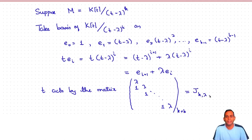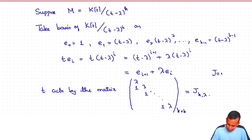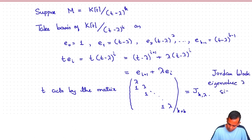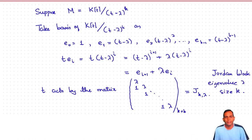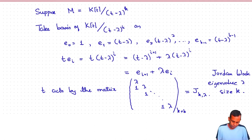Such a matrix is called a Jordan block with eigenvalue λ of size k. These are the building blocks of matrices over an algebraically closed field.